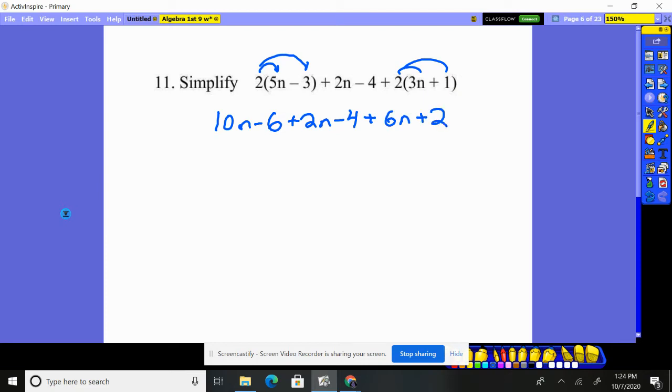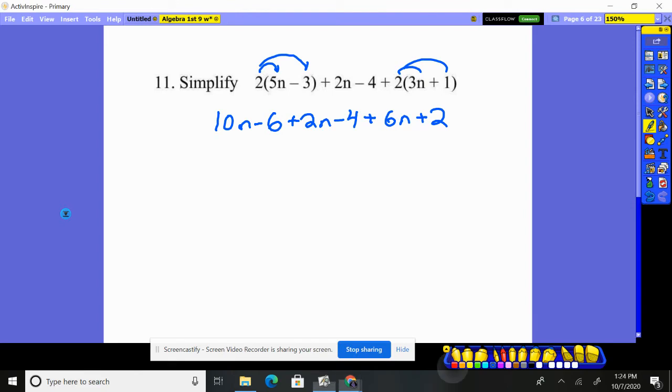Now I just have to put together things that are the same. So let's see what's the same. I got a 10n, plus 2n, plus 6n. So what is all that together? 10 plus 2 is 12, plus 6 more is 18n.